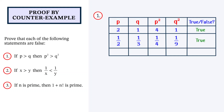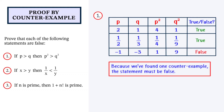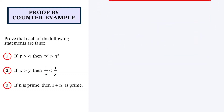We could now try a negative number. Let's try p is equal to minus 1 and q is equal to minus 3. So p squared is 1 and q squared is 9. As you can see, p is greater than q, but p squared is not greater than q squared — it's less than q squared. So that means this is false. Because we have found one counterexample, the statement must be false.